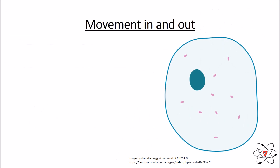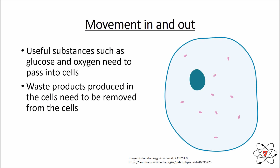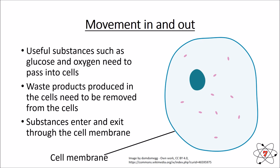We need to know about movement in and out of our cells. All cells contribute towards the seven life processes. In order for that to happen, substances such as glucose and oxygen need to pass into cells, and waste products need to be removed. Substances enter and exit a cell through the cell membrane — through our partially permeable membrane. Some things are allowed in, other things are allowed out, but not everything.